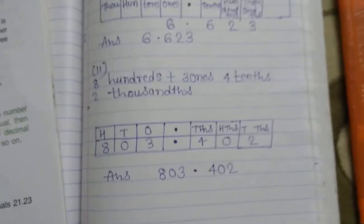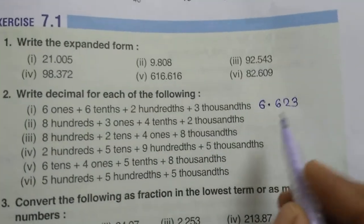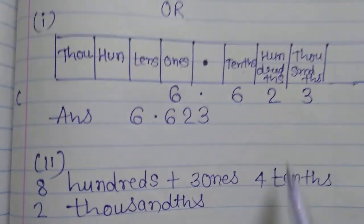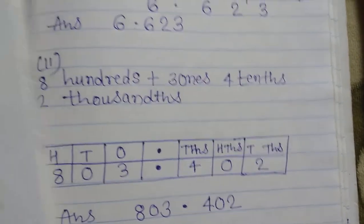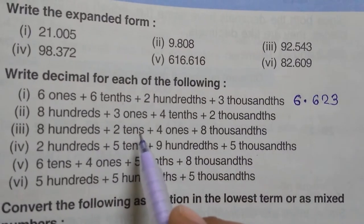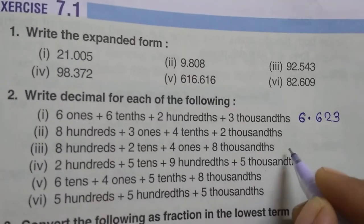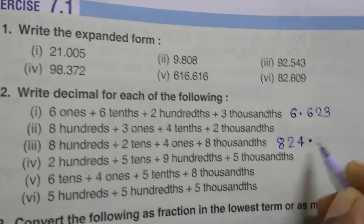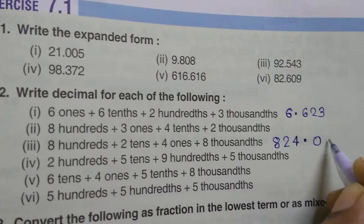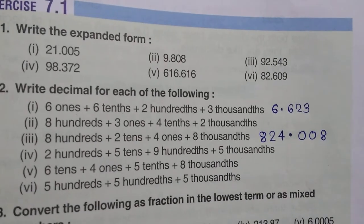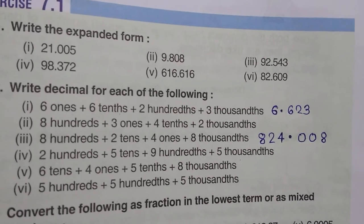Now let's see question number 3 of this section. We have: 800, two tenths, four ones, eight thousandths. Filling the chart: hundreds box gets 8, tenths box gets 2, ones box gets 4; nothing in the tens, nothing in the hundredths, and eight in the thousandths. This way question number 3 gives us 824.008.